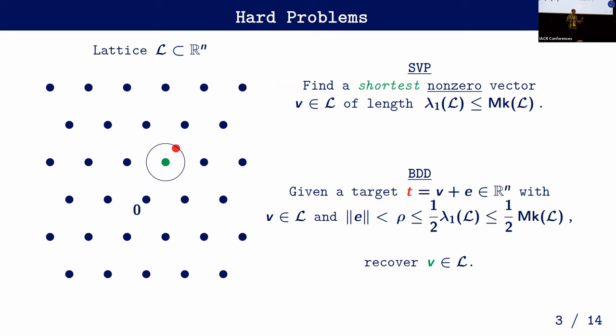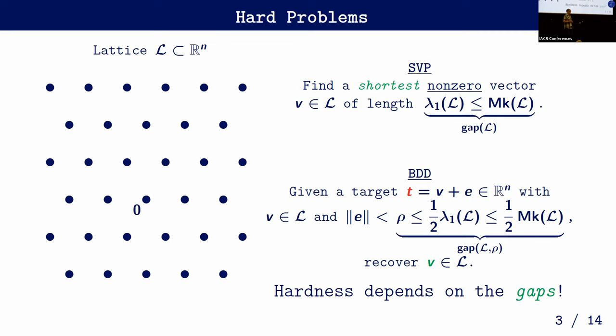The concrete hardness of these problems depends on the gap between the Minkowski bound and the actual first minimum. If you have a first minimum that's much shorter than what this Minkowski bound says, it's also much easier to recover this vector. Similarly for the Bounded Distance Decoding problem: if ρ is very small then your target lies much closer to the lattice and it's also easier to recover the closest lattice point. So the concrete hardness really depends on these gaps.